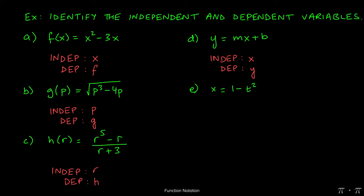Lastly, we see x equals 1 minus t squared. In this example, t is the independent variable, while x is the dependent variable, because the value of t is what tells us what x is going to be. The value of x depends on prior knowledge of what t is.